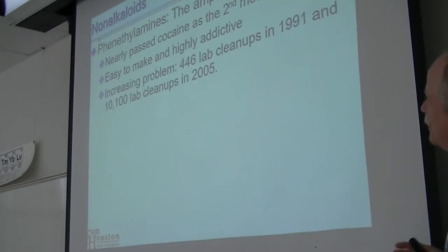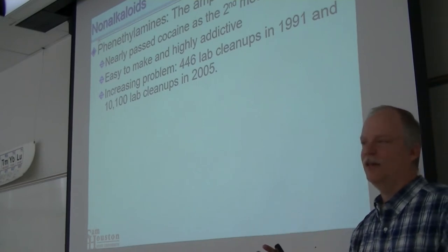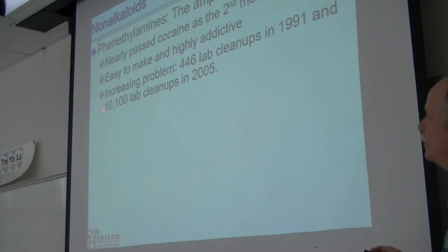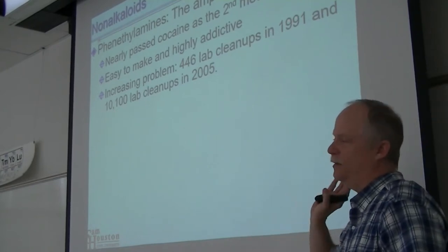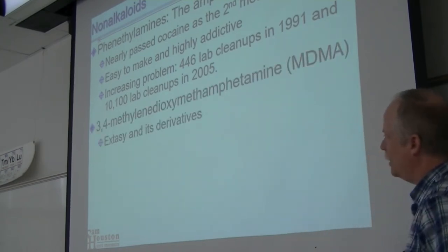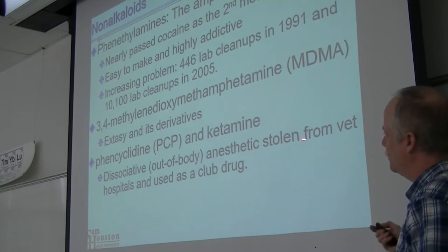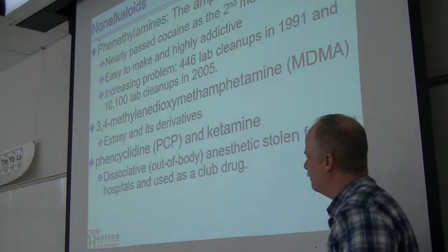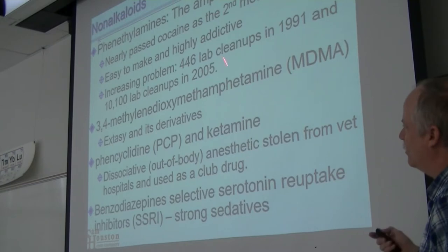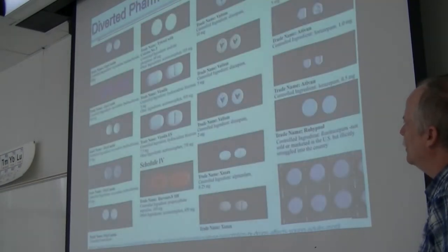The non-alkaloids, the non-extract things - phenylethylamine is the amphetamine family. It surpassed cocaine as the second most abused drug quite a while ago. It's easy to make and highly addictive. That's a pretty big change from 446 in 1991 to 10,000 in 2005, and I'm sure it's gone up. Then we have ecstasy and its derivatives, phencyclidine and ketamine - an anesthetic stolen from vet hospitals. Then these strong sedatives - pharmaceutical substances that are typically stolen, and diverted pharmaceuticals.